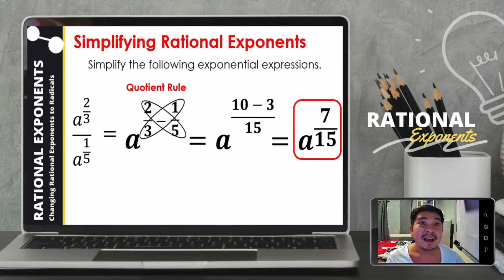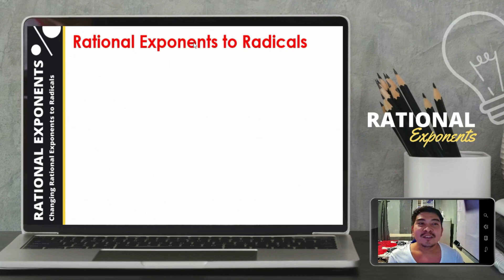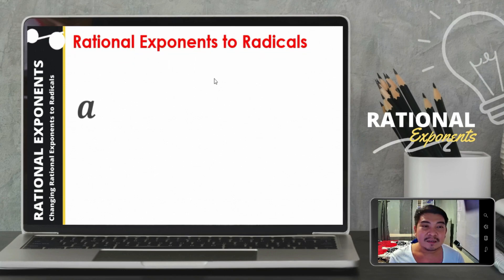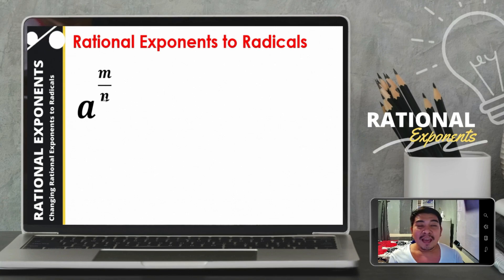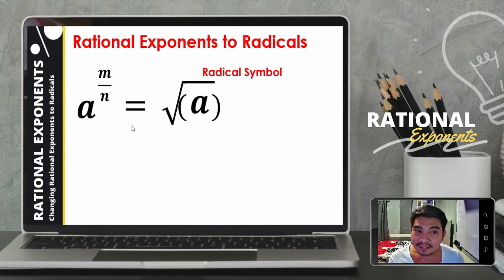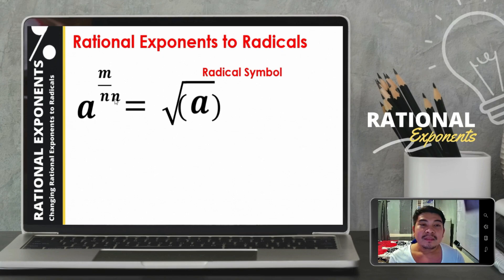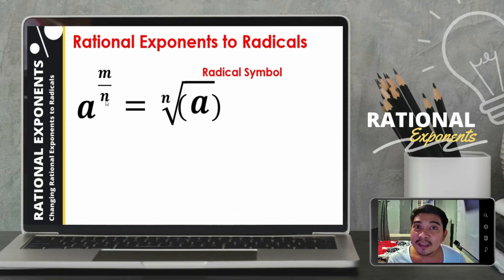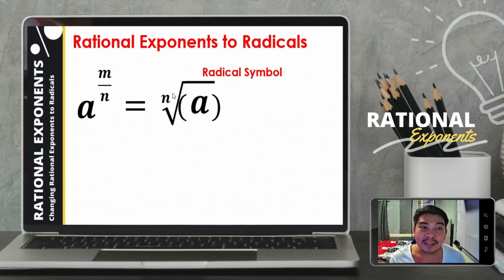That is how we simplify expressions with rational exponents. Next, let us rewrite rational exponents as radicals. When we are given an expression with a rational exponent — a raised to m over n — it can be transformed to radical form.